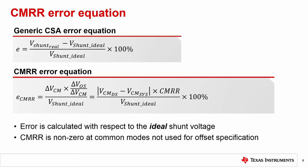As a reminder, most current sense amplifier errors can be generalized as the ratio of the deviation of the real shunt voltage to the ideal shunt voltage. The deviation from the ideal shunt voltage is an offset. In another video, we cover offset error, which includes the impact of a specific common mode voltage and a specific supply voltage, typically at room temperature.